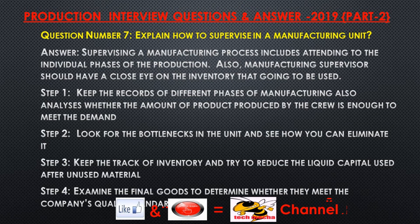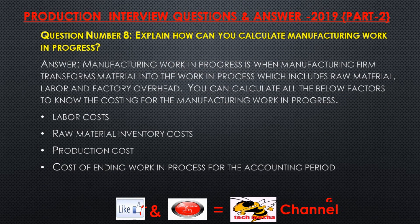Question number seven: Explain how to supervise in a manufacturing unit. Answer: Supervising a manufacturing process includes attending to the individual phases of production, and the supervisor should keep a close eye on inventory. Step one: keep records of different phases of manufacturing and analyze whether production output meets demand. Step two: look for bottlenecks and eliminate them. Step three: track inventory and reduce liquid capital tied up in unused material. Step four: examine final goods to ensure they meet the company's quality standards.